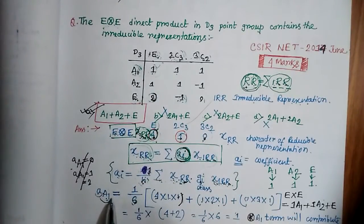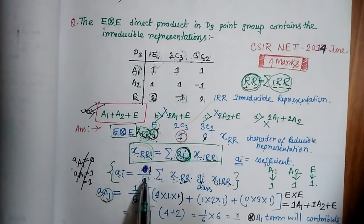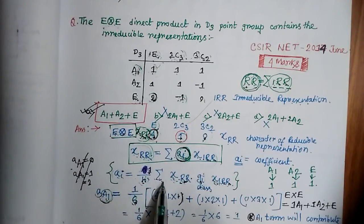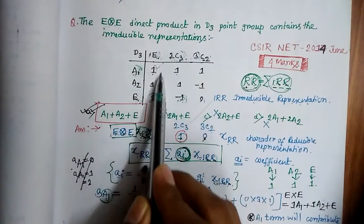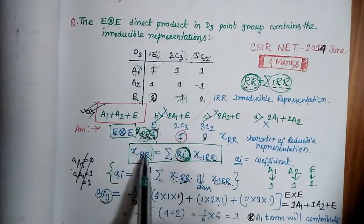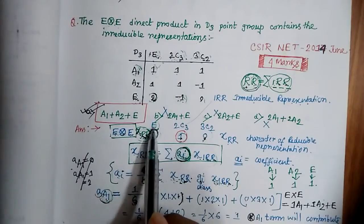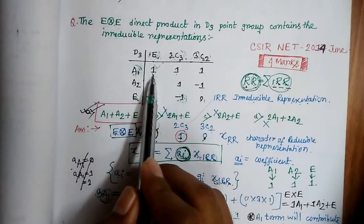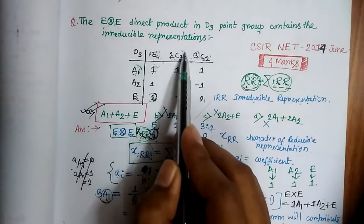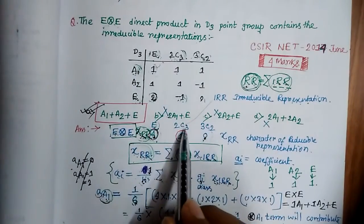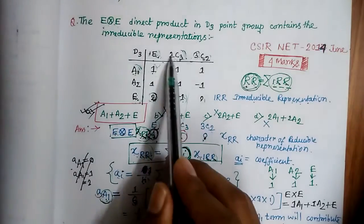Let's determine the coefficient of the A1 irreducible representation. Using the decomposition formula: aᵢ = (1/6) × Σ [class × χ(RR) × χ(A1 IRR)]. Concentrate on the A1 row of the character table. For symmetry element E: the character of the reducible representation is 4, the class is 1, and the character of A1 is 1. For C3: we need χ(RR) = 1, class = 2, χ(A1) = 1.